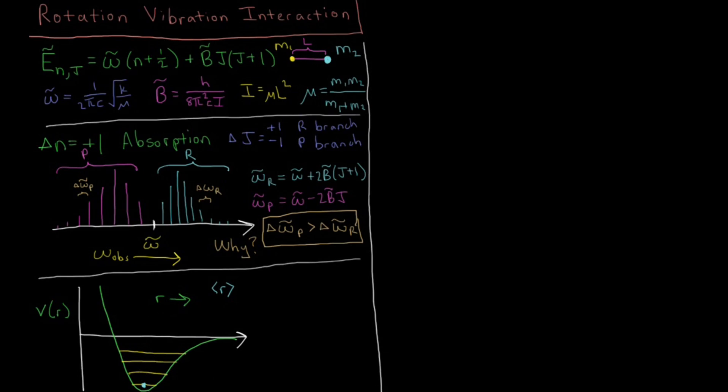So adding in more terms in the Taylor series would give you an expectation value for the bond length which increases slightly as you go to higher and higher vibrational levels. So the expectation value of r for some general state n would be larger than it would be for the n equals zero state.